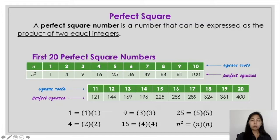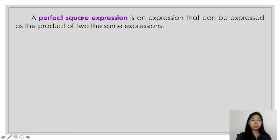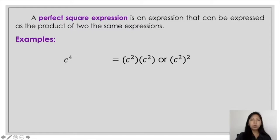In short, perfect square numbers can be expressed as the product of a number multiplied by itself two times. Another thing that you have to consider is the perfect square expression, which can be expressed as the product of two same expressions. Examples are: c raised to 4 can be expressed as c squared times c squared, or the square of c squared. 9x raised to 6 can be expressed as 3x cubed times 3x cubed, or the square of 3x cubed.